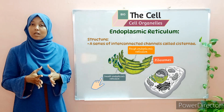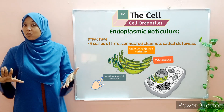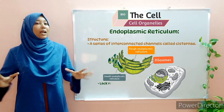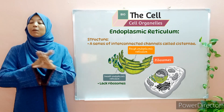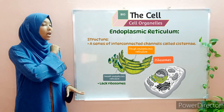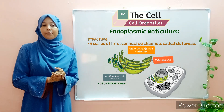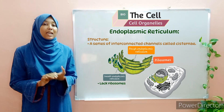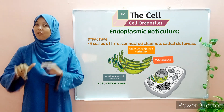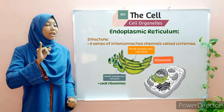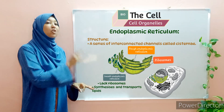The smooth endoplasmic reticulum is referred to as such because it lacks ribosomes and therefore has a smooth-like appearance. Its function is completely different from that of the rough ER. The function of the smooth endoplasmic reticulum is to manufacture lipids — essentially fats and oils — and then to transport these lipids.